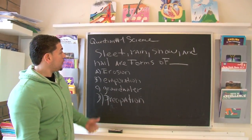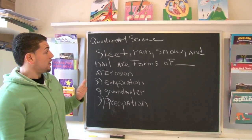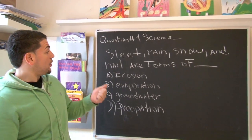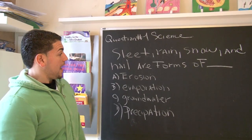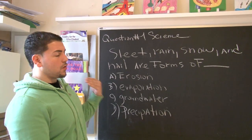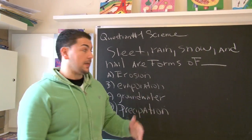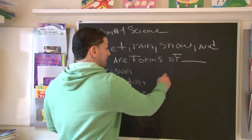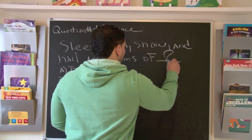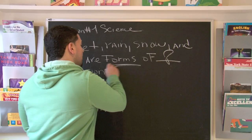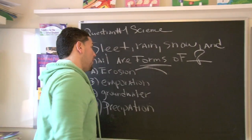What we're starting with today is a question about sleet, rain, snow, and hail, and they're saying that these are all forms of something. What we're trying to find out is what are they forms of?